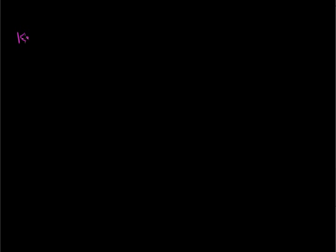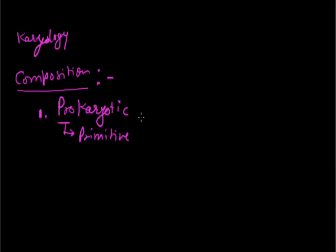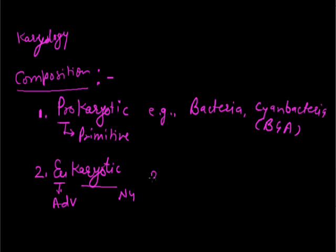The study of the nucleus is called karyology. On the basis of nuclear composition, living beings are divided into two groups. First, prokaryotes — 'pro' means primitive and 'karyon' means nucleus — organisms having a primitive nucleus, for example bacteria and cyanobacteria, which are blue-green algae. Second, eukaryotes — organisms having an advanced nucleus, for example all plant and animal cells.